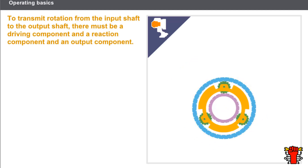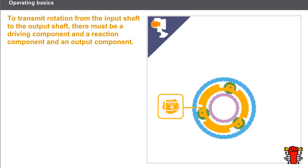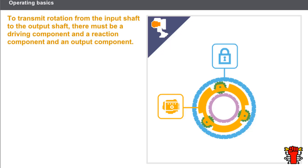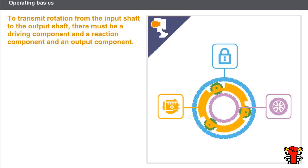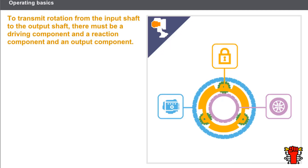To transmit movement from the input shaft to the output shaft, three components are required: a drive component turned directly by the turbine shaft; a reaction component prevented from rotating to obtain different movement combinations; and an output component connected to the output motion shaft. In an automatic transmission, each component of an epicyclic gear train can act as a driving component, a reaction component, or an output component.